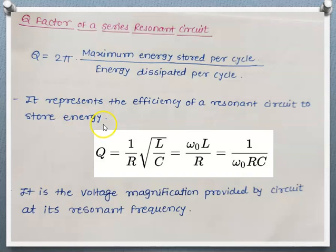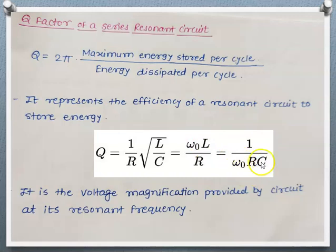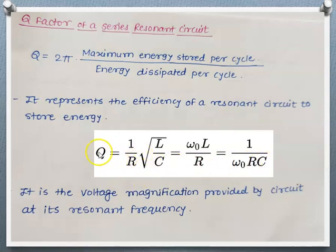The Q factor represents the efficiency of a resonant circuit to store energy. In terms of circuit elements, Q is equal to ω₀L divided by R, which equals 1 divided by ω₀RC, where ω₀L is the inductive reactance and 1/ω₀C is the capacitive reactance. It can also be expressed as (1/R)√(L/C). From this expression, Q is inversely proportional to R — if we increase R, the quality factor will decrease.